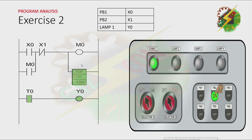Now let's press PB2. By pressing PB2, X1 will open here, and that will cause M0 to deactivate. And because this one is a timer of delay, we need to wait for 3 seconds before this one is deactivated. That's how we analyze this program.